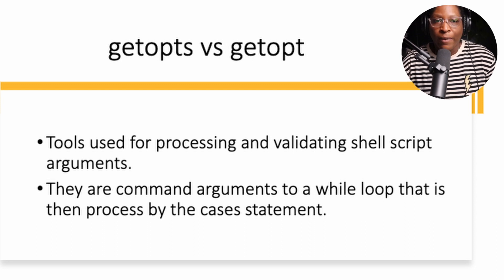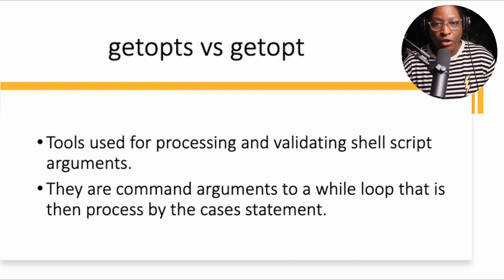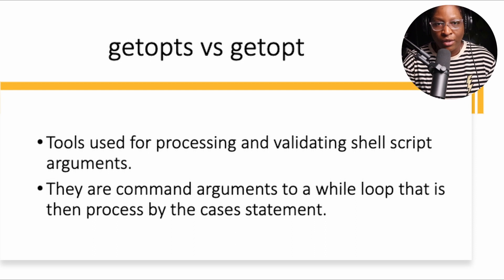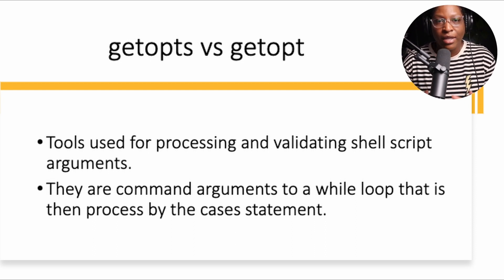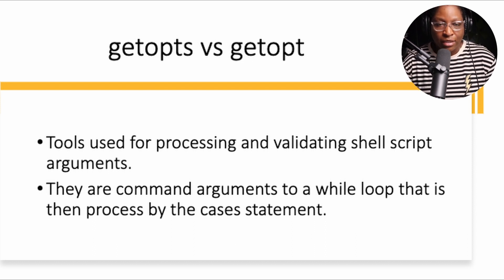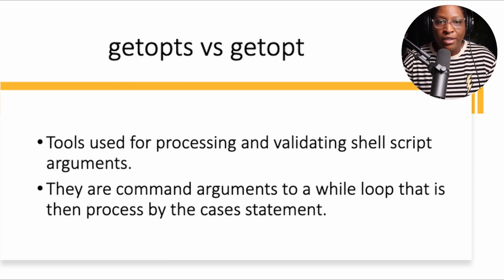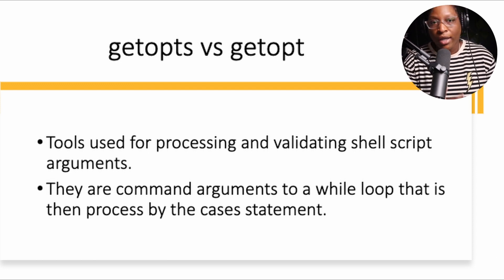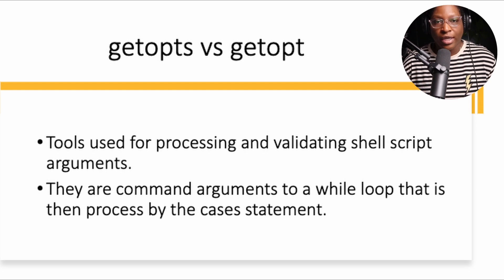getopt and getopts are tools used for processing and validating shell script arguments. getopt without the 's' and getopts with the 's'. You can see the similarities with both options but they are not identical. The getopts and getopt commands are arguments to a while loop, and the while loop then uses a switch case to process the arguments.